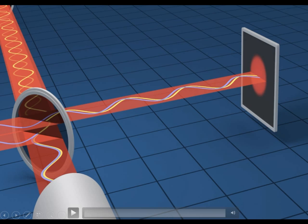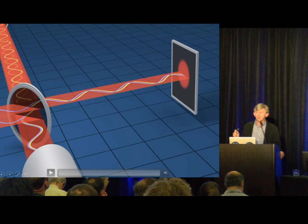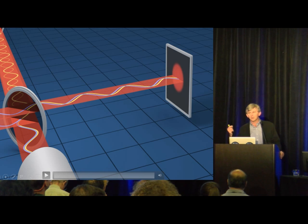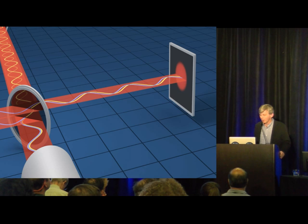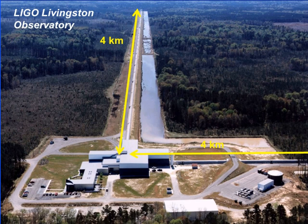The arms at Livingston are four kilometers long — that's the L in the denominator. So you need to measure delta L to about 10 to the minus 18 or 10 to the minus 19 meters. LIGO is a Michelson interferometer on steroids. We use Fabry-Perot cavities that allow the light to stay in the interferometer longer, effectively making the light think it's traveling much longer distances. We add power recycling to resonantly couple light back in, reducing shot noise by about a factor of 40 or 50.